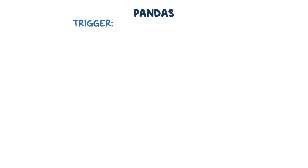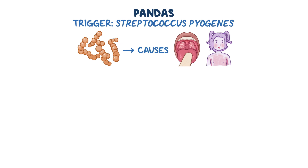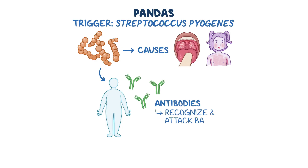The trigger is a common type of bacteria called Streptococcus pyogenes, the same one that causes strep throat or scarlet fever. When strep enters the body, the immune system responds by making antibodies, which are specialized proteins that recognize and attack the bacteria.